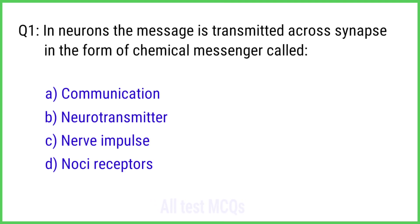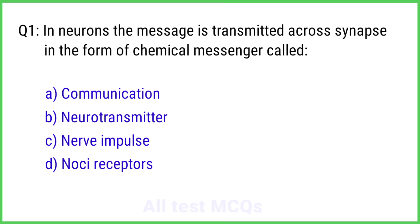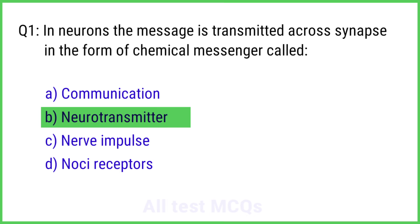Question No. 1. In neurons, the message is transmitted across a synapse in the form of a chemical messenger called? The right answer is Option B: Neurotransmitter.